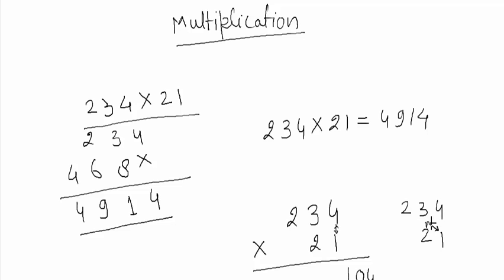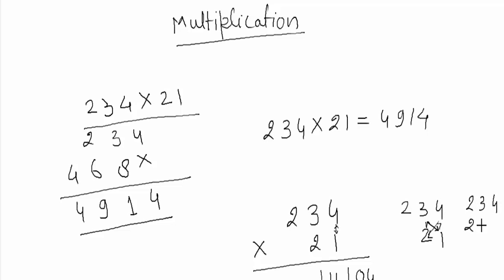Cross multiply: 3×1 plus 4×2 gives 3 plus 8 equals 11. So just write 11 here as it is. Now the numbers shift one place to the left for the next step: 234 and 21.